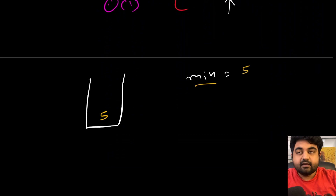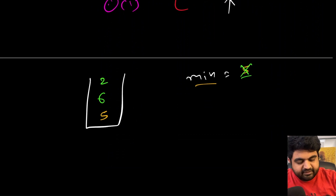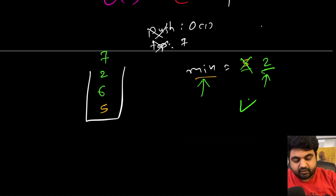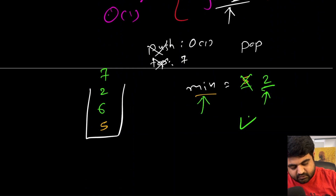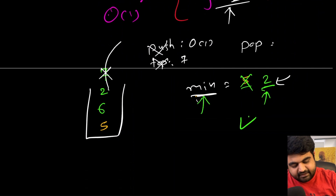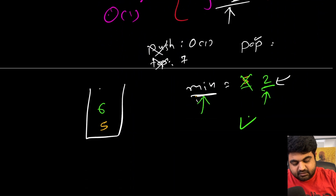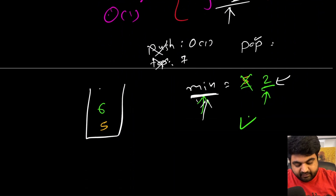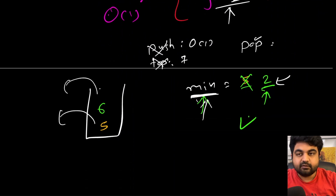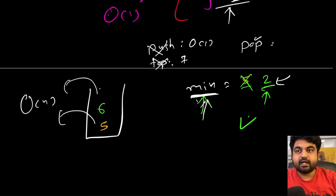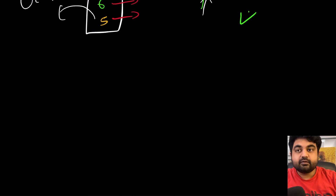The first idea is to keep an extra variable called min to track the minimum value encountered so far. If we push five, six, two, then seven, the minimum is two. But the problem arises when we pop: if we pop seven and then two, the min variable still holds two, but two is no longer in the stack. We don't know the new minimum without scanning all elements, which takes O(n) time.